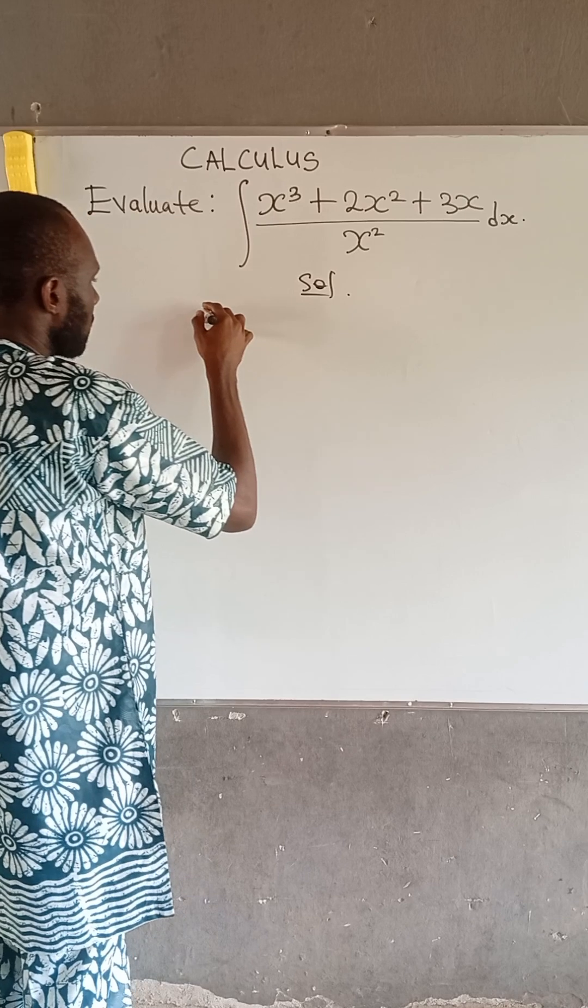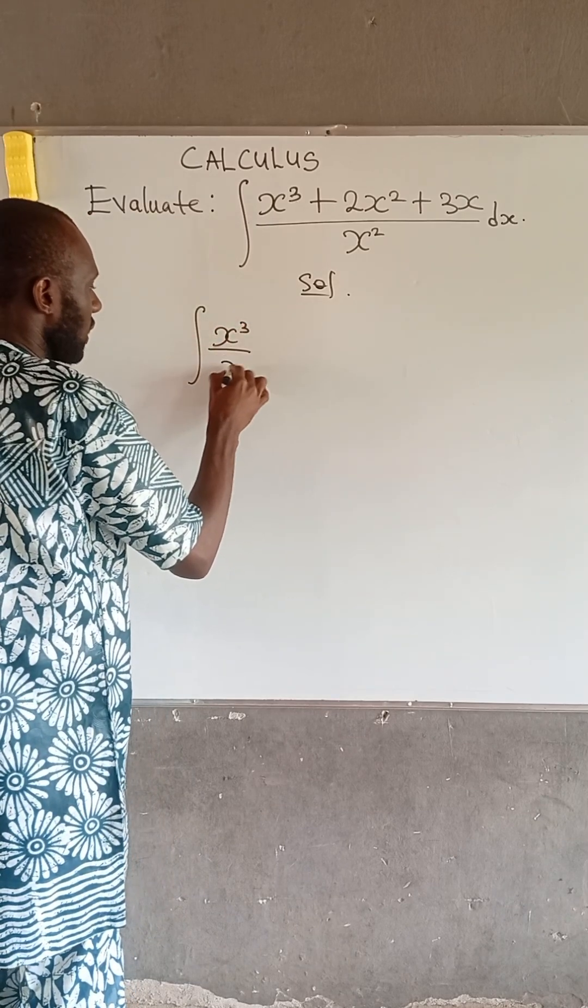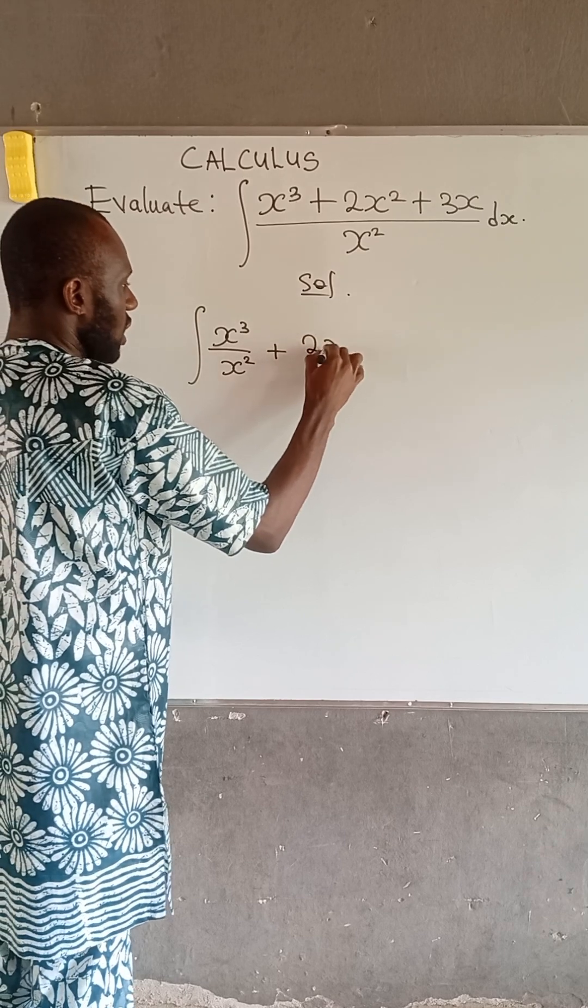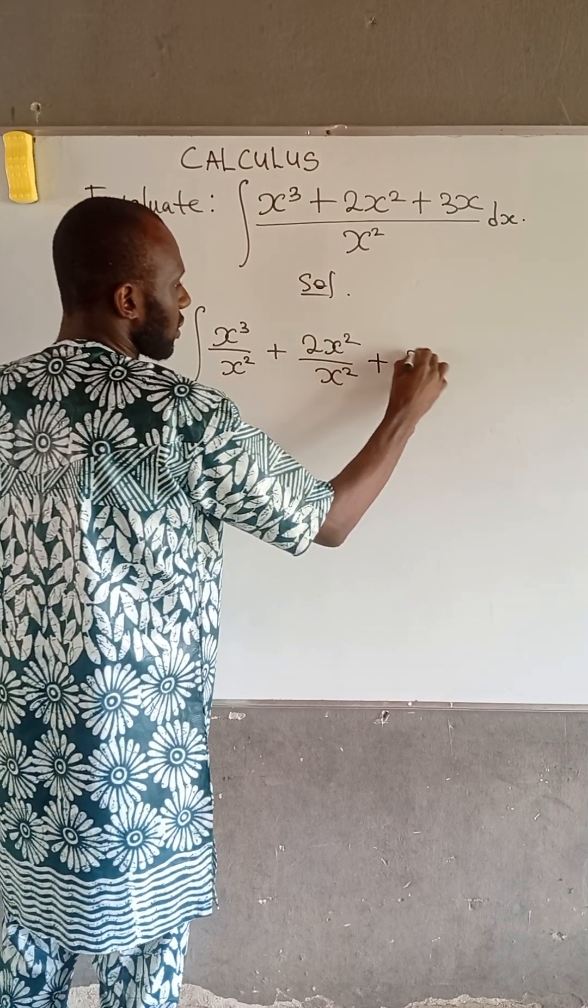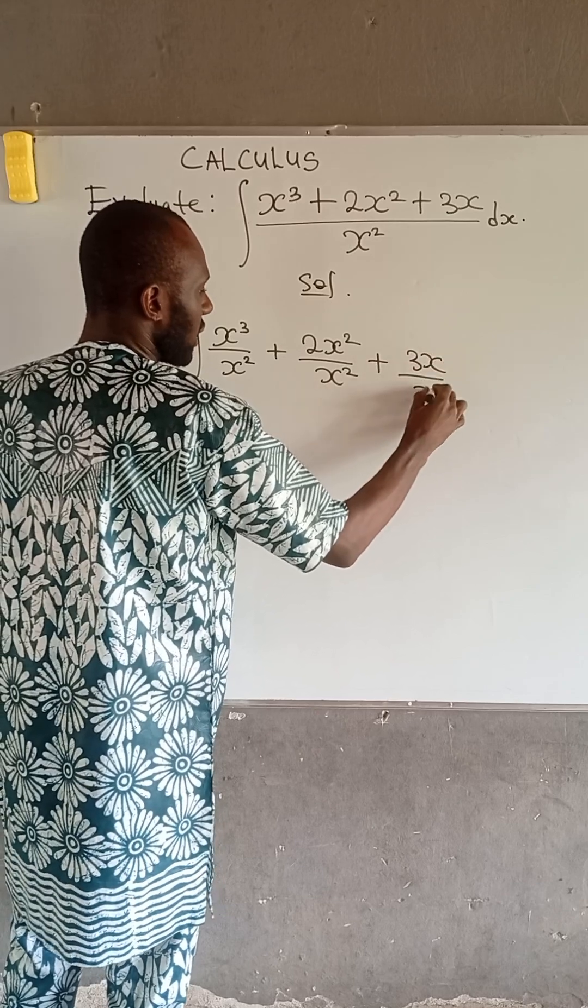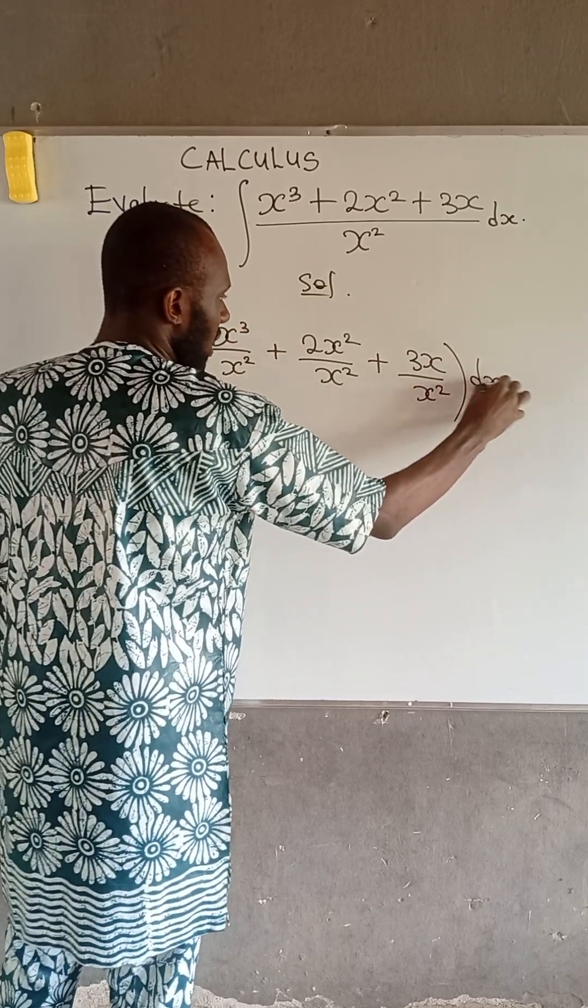So we have that this becomes integral of x cubed divided by x squared plus 2x squared divided by x squared plus 3x divided by x squared, or multiply by dx.